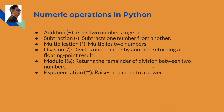The next operator is the power operator — exponentiation. The double asterisk star is the power operator. It raises a number to a power. For example, 2 to the power of 2 equals 4, and 2 to the power of 3 equals 8.